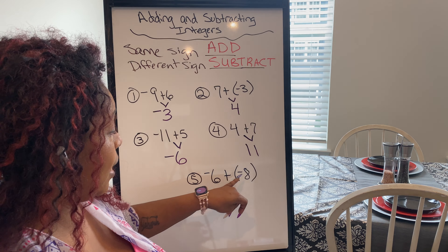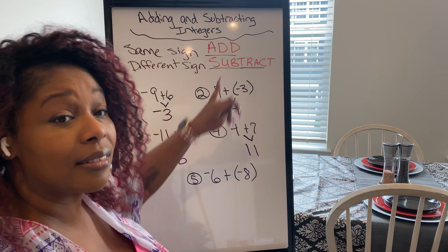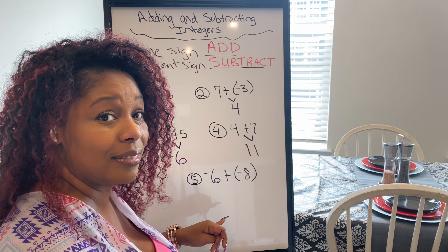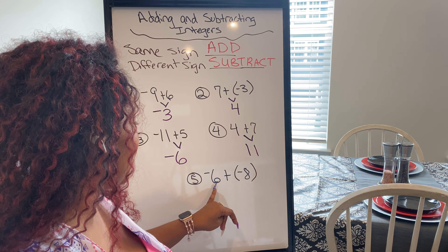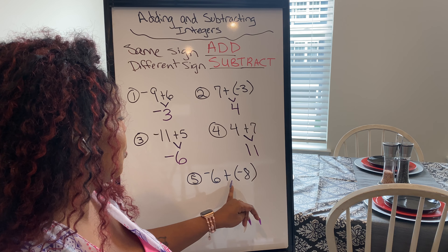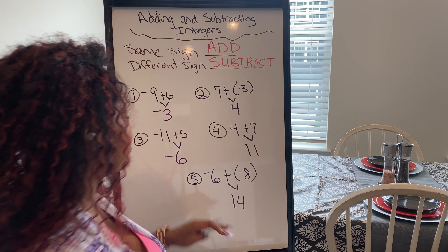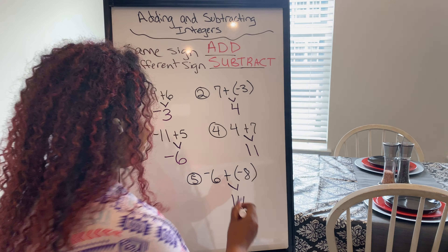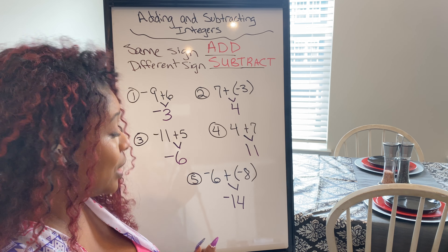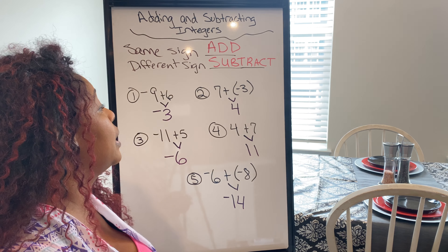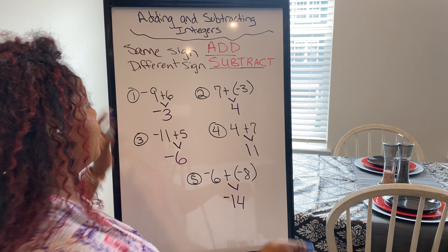Negative 6 plus negative 8 — are they the same sign? They are the same sign, so don't subtract them. 6 plus 8 gives me 14, and because both signs are negative, I keep the negative sign, giving me negative 14. We've shown this on the number line and using red-yellow chips in class.